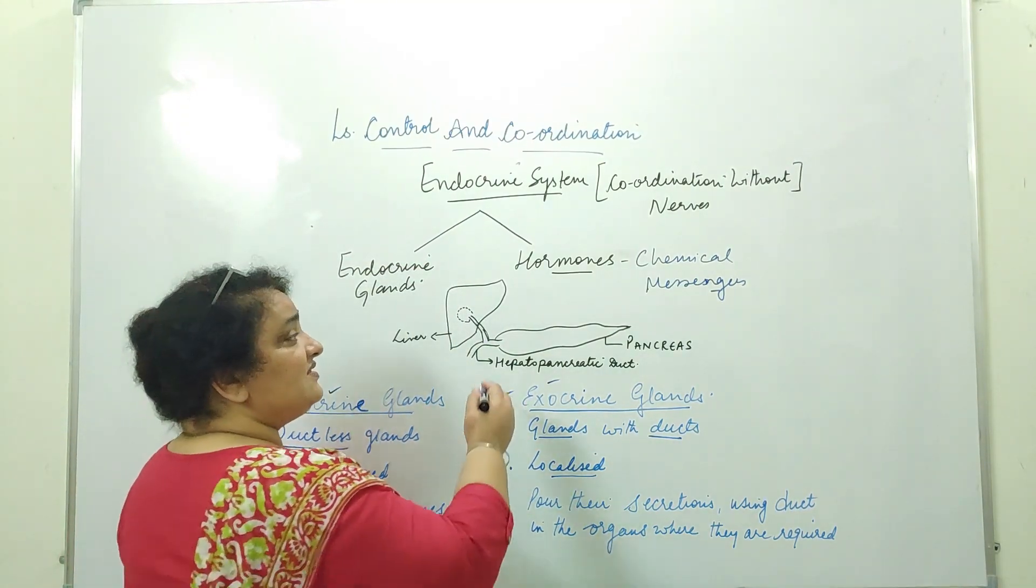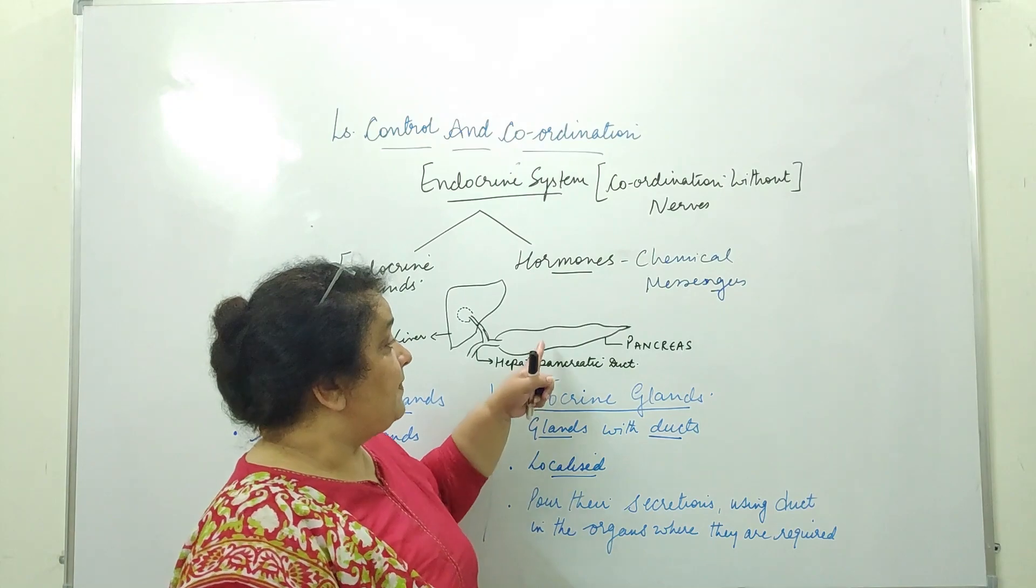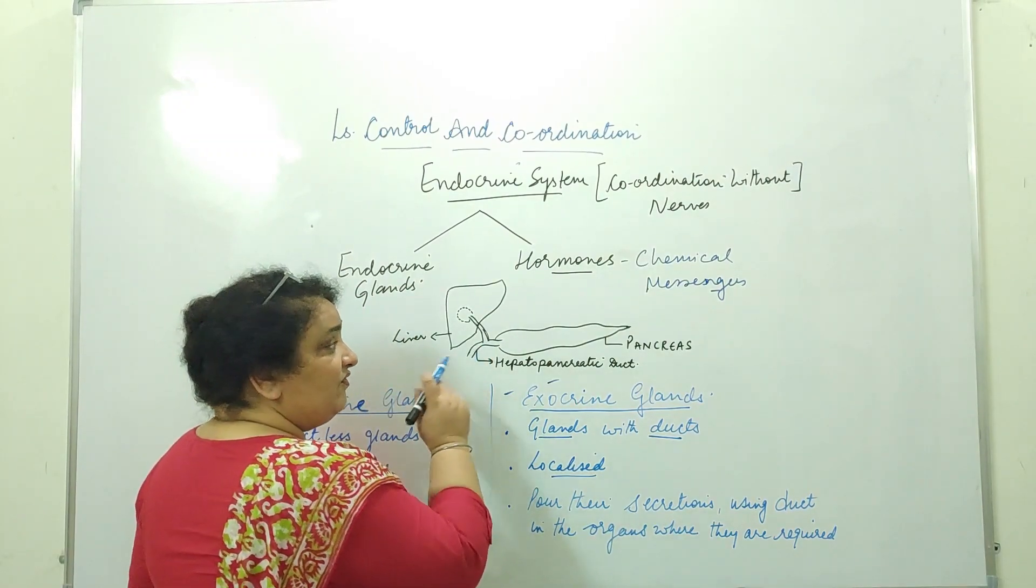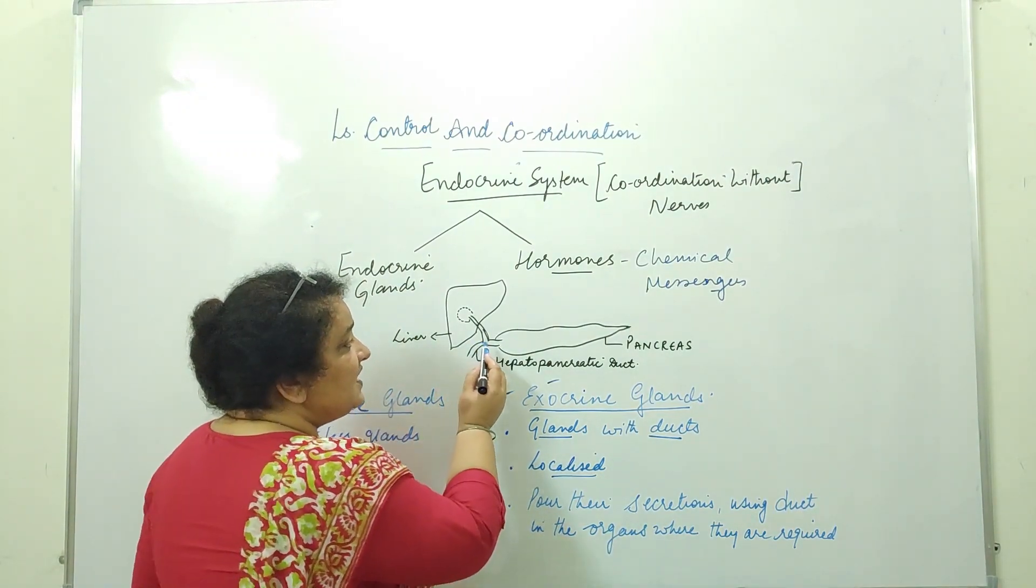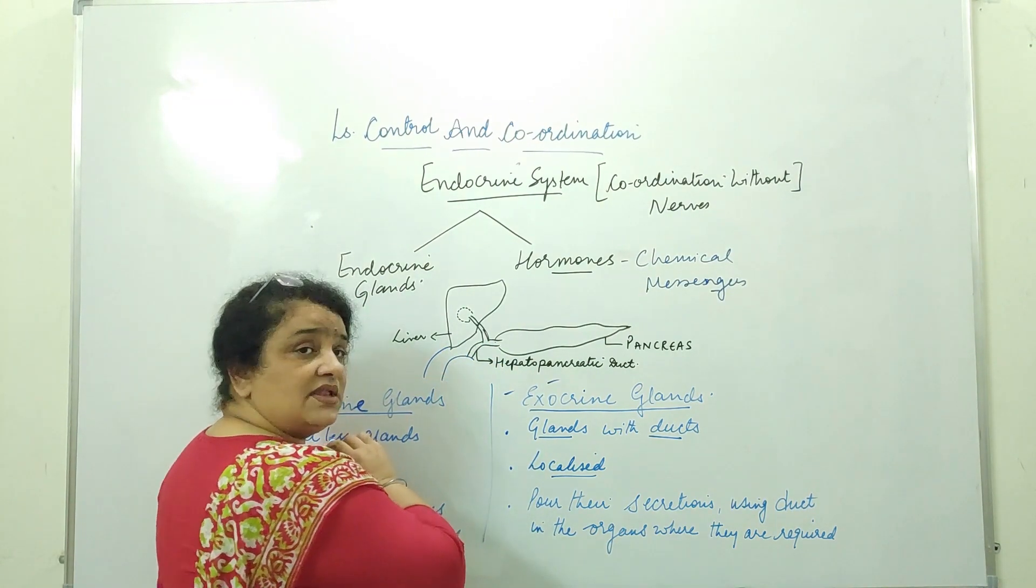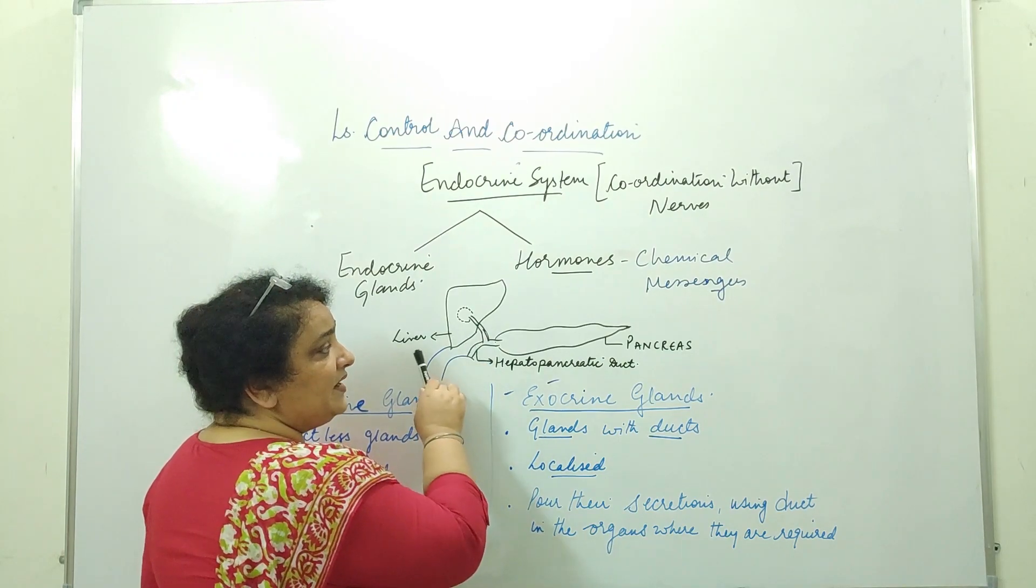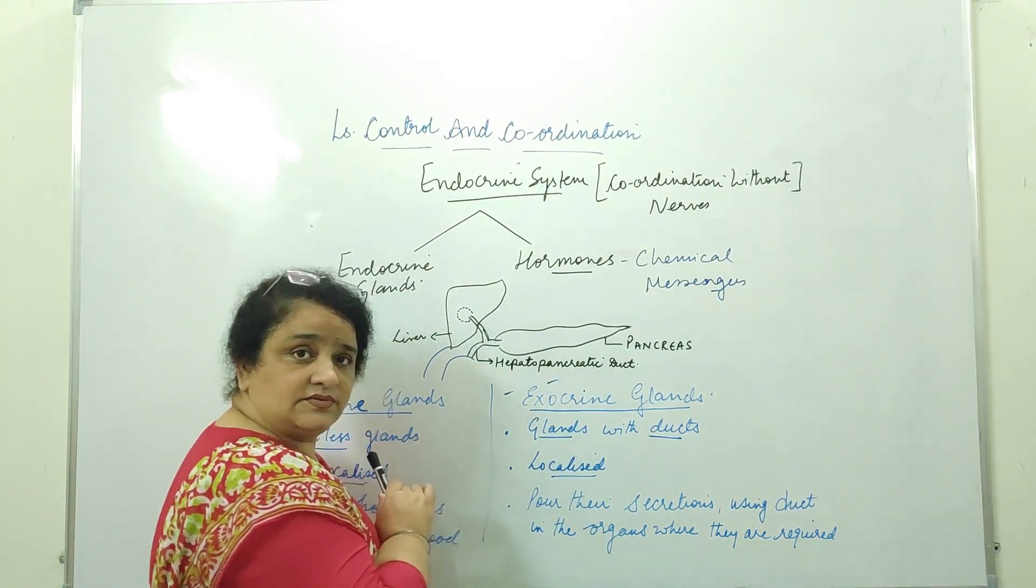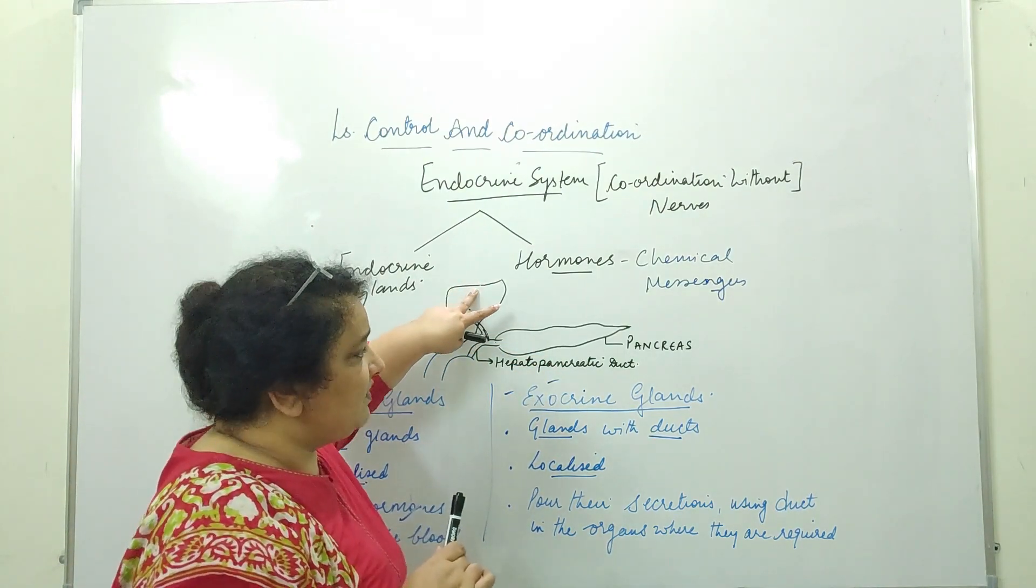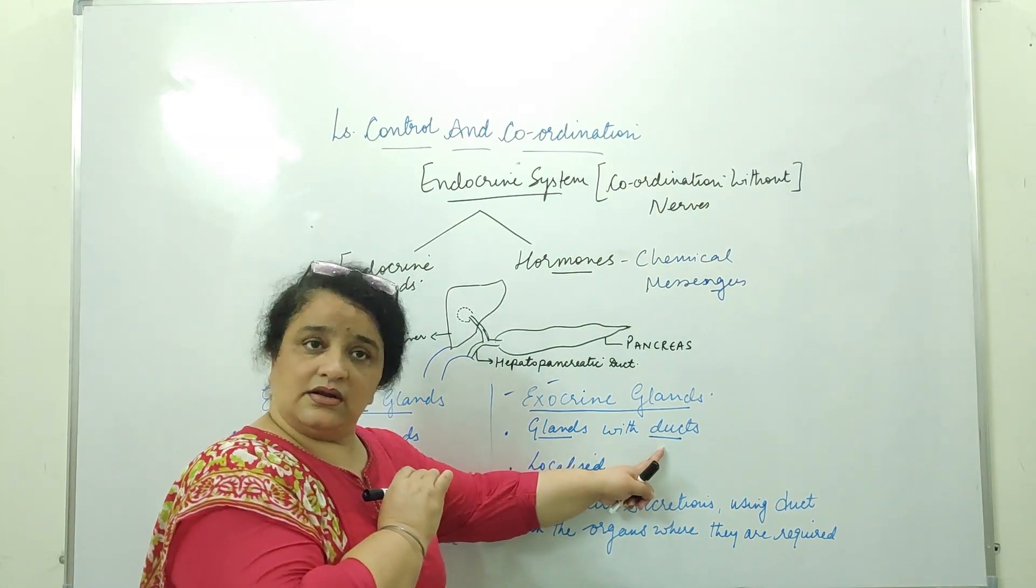And I will just come to this as an example. This is a gland we did it in the digestive system, that is the pancreas which is located just below the stomach. So this pancreas when it secretes its pancreatic juice then it uses this duct and it is poured in the part of the small intestine, you remember that duodenum. And liver also secretes the secretion that is bile juice with a combined duct called hepatopancreatic duct. So these two glands need this duct to pour their secretions. So liver and pancreas both are exocrine glands because they are using the ducts.